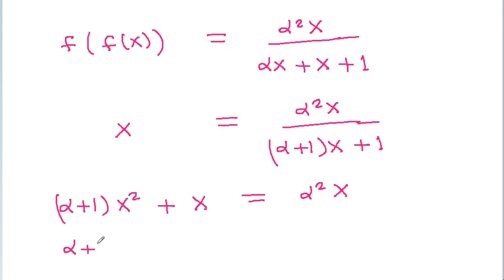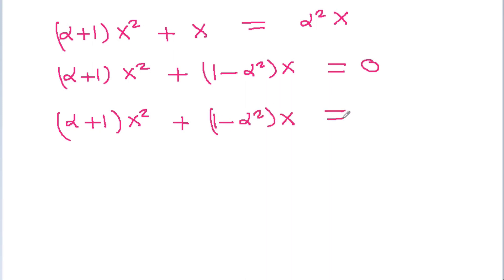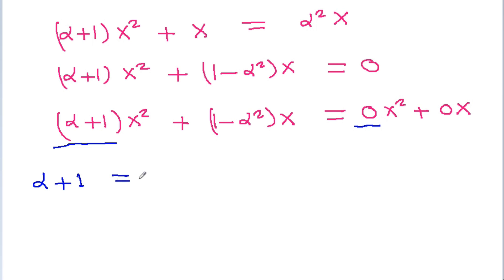And it is (alpha plus 1)x squared plus (1 minus alpha squared)x is equal to 0, which can be written as 0 times x squared plus 0 times x. If we compare coefficients of x squared, we get alpha plus 1 is equal to 0. And if we compare coefficients of x, we get 1 minus alpha squared is equal to 0.